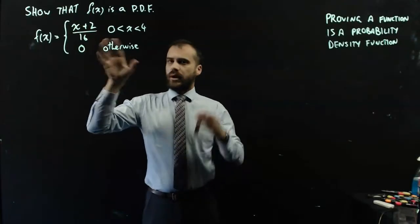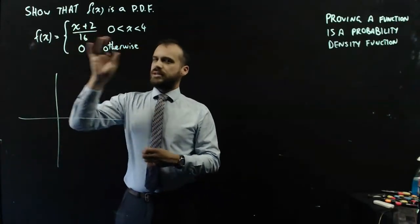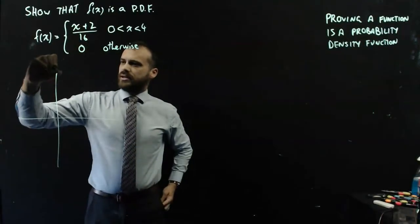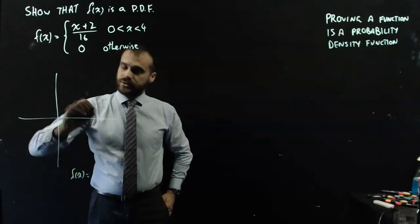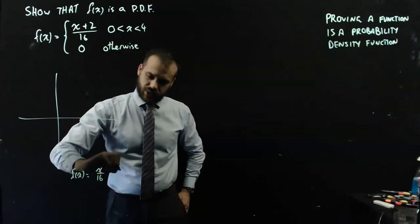So I'm just going to sketch this really quickly. This is a straight line, believe it or not, because I can rewrite that as f of x equals x on 16 plus 2 on 16, which is 1 eighth.